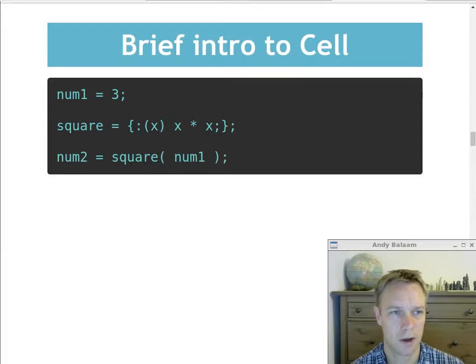So here are some more examples of what we can do. Basically, the same kind of stuff. Creating a variable called num1, and then creating a function called square, which does X times X, where X is its input, its argument. And then you can call a function in a sort of Python-like style.